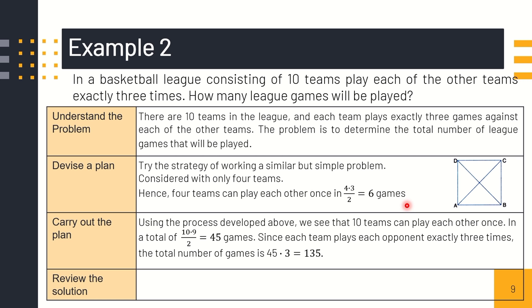Using the process developed above, we see that ten teams can play each other once in a total of ten times nine divided by two, we have forty-five games. Since each team plays its opponent exactly three times, the total number of games is forty-five times three, that is 135 league games will be played. By using the similar problem, we can solve this kind of problem. To check, we can make an organized list to verify if our answer is correct.